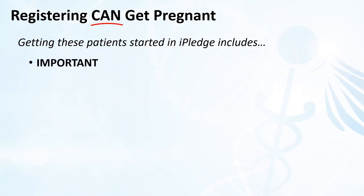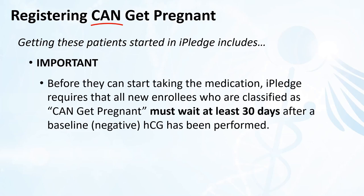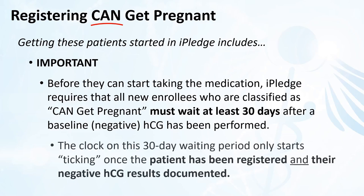Here's where things get really important during the registration process. iPledge requires that before any new enrollees classified as can-get-pregnant begin treatment, they must wait at least 30 days after their baseline negative HCG has been performed. It doesn't matter if the patient is abstinent or has had her tubes tied — if the patient is classified as can-get-pregnant, pregnancy testing must be performed.